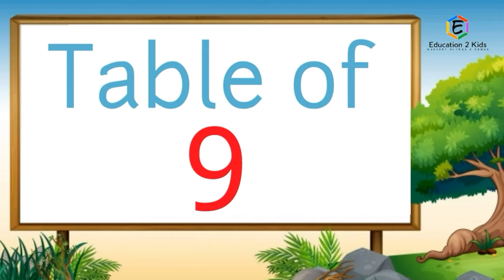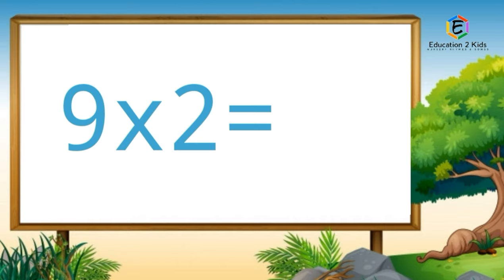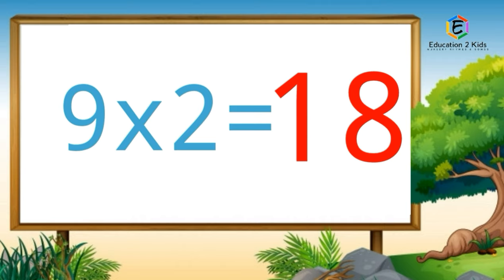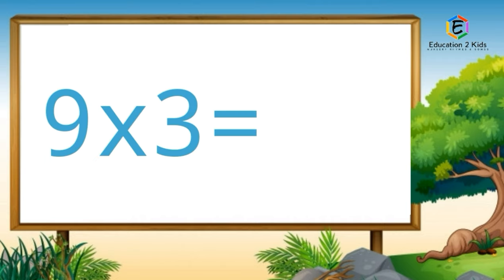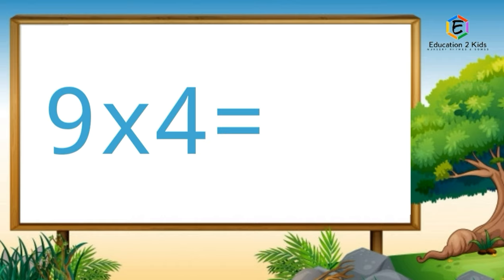Table of Nine. Nine ones are nine. Nine twos are eighteen. Nine threes are twenty-seven. Nine fours are thirty-six.